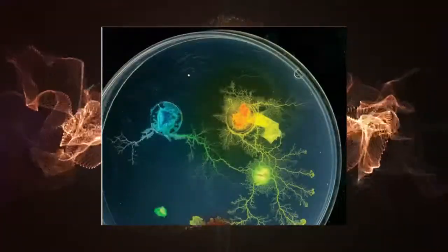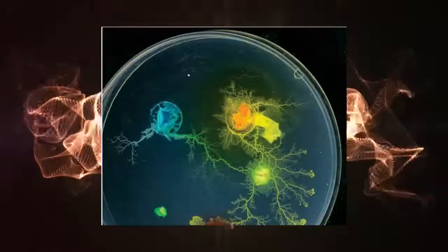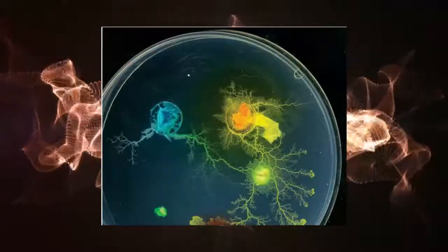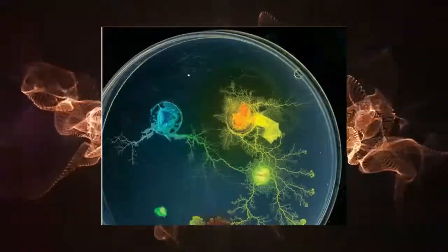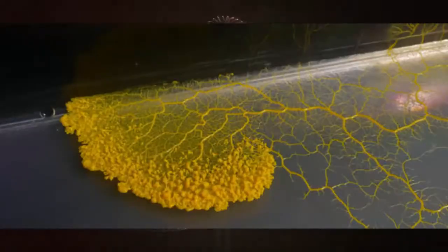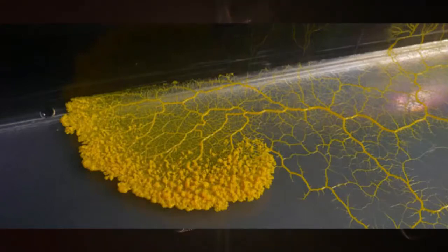In one experiment, they took a map of Canada, dropped oat flakes—slime mold food—on the nation's major cities, and placed the mold on Toronto. It spread out to form the most efficient paths to the cities, creating networks of roads that almost perfectly mimic the actual Canadian highway system.